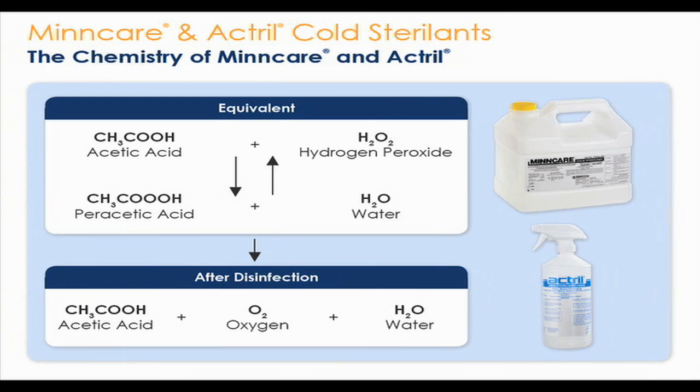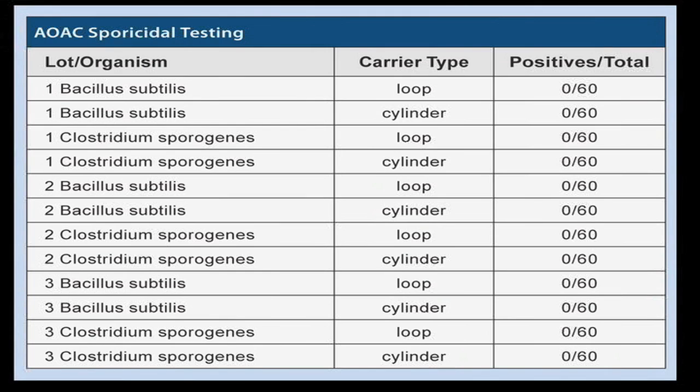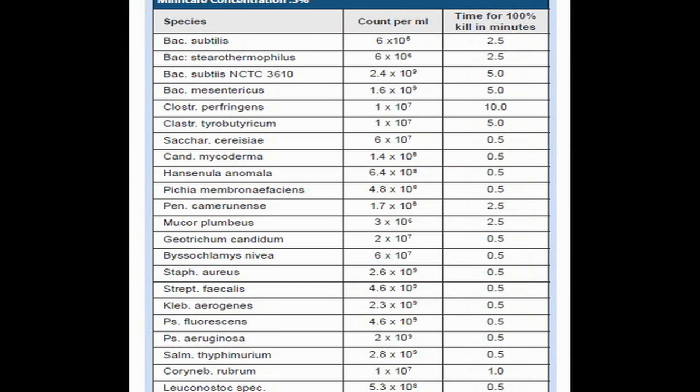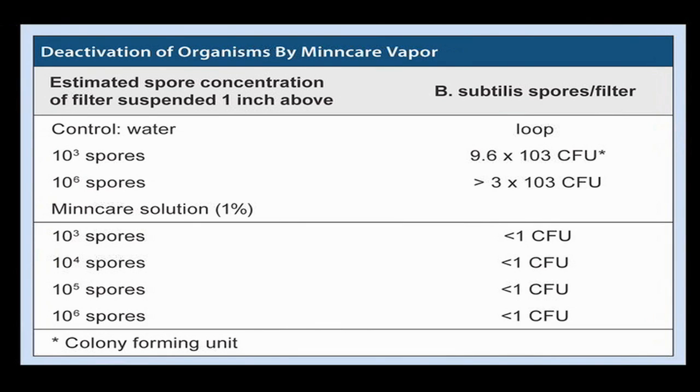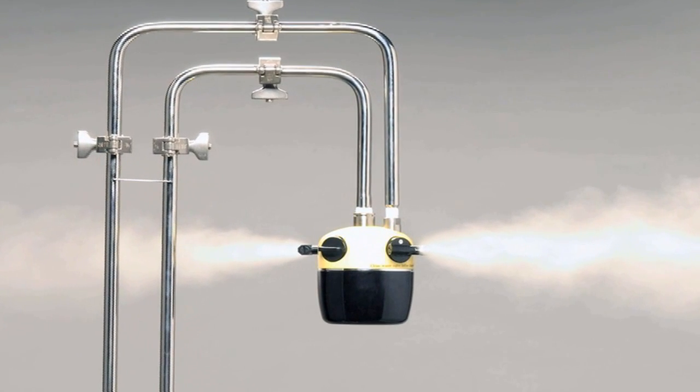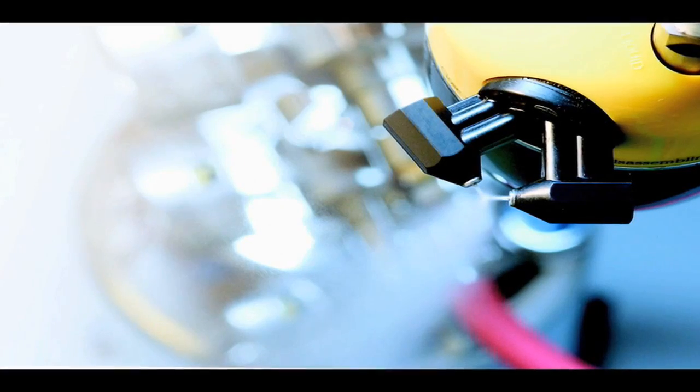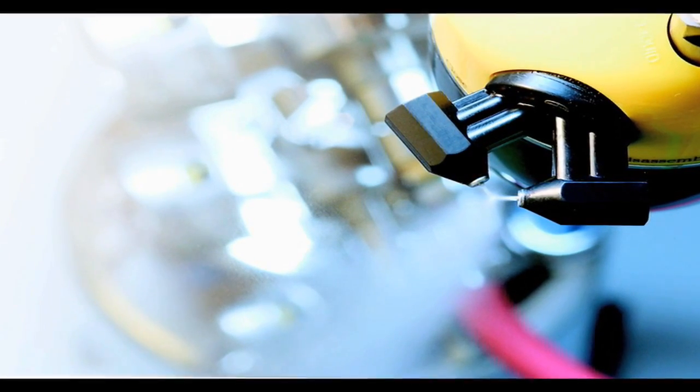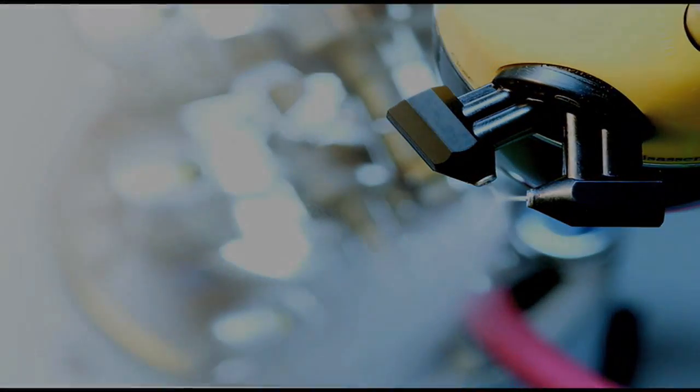MinCare is hydrogen peroxide and parasitic acid. Parasitic acid attacks bio-burden, tearing the cell wall open by lysis, thus killing the microorganism. When we atomize MinCare in our dry fog system, due to Brownian motion in that clean room, that parasitic acid goes everywhere and does a complete clean room disinfection.